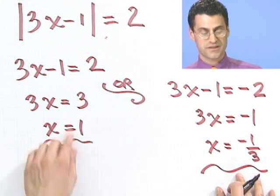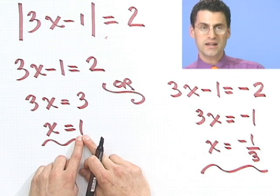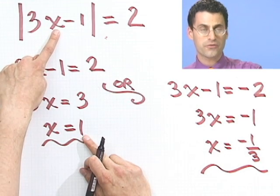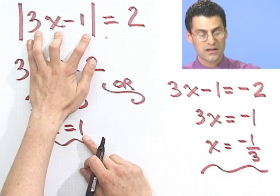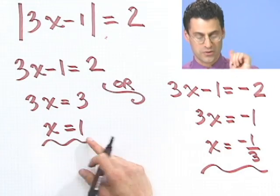So these are two answers to this. You can check to see if they're right. If I plug in a 1 here, look what happens. If I plug in a 1 for x, I see 3 minus 1. That's 2. Absolute value of 2? 2. Checks.